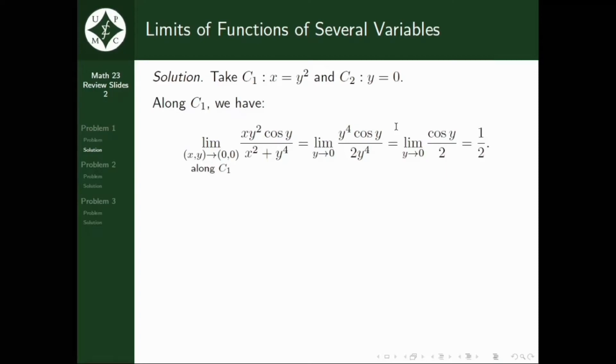However, let's look at along curve 2. If we evaluate the limit of XY squared cosine Y all over X squared plus Y to the fourth, as XY approaches the origin, we have the limit of 0 all over X squared as X approaches 0. But this just implies that the limit along the second curve is just equal to 0.